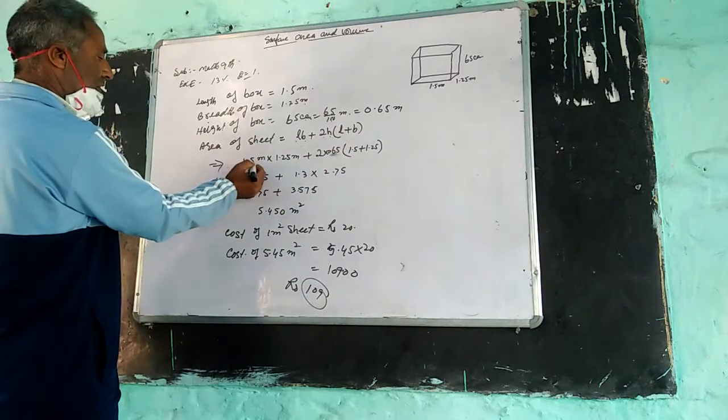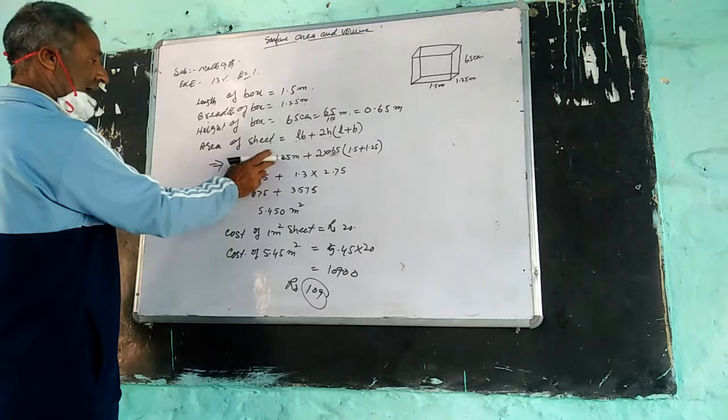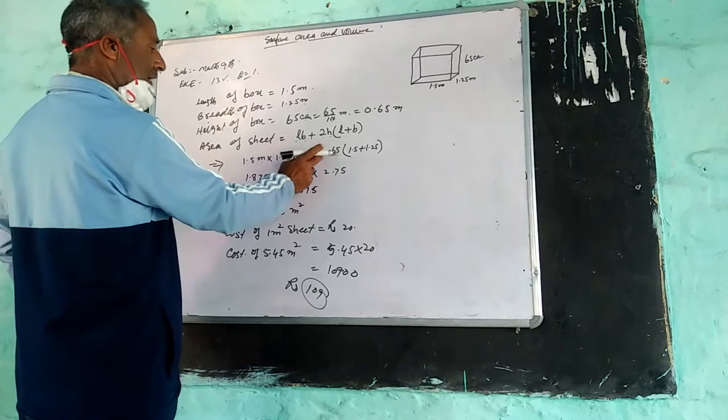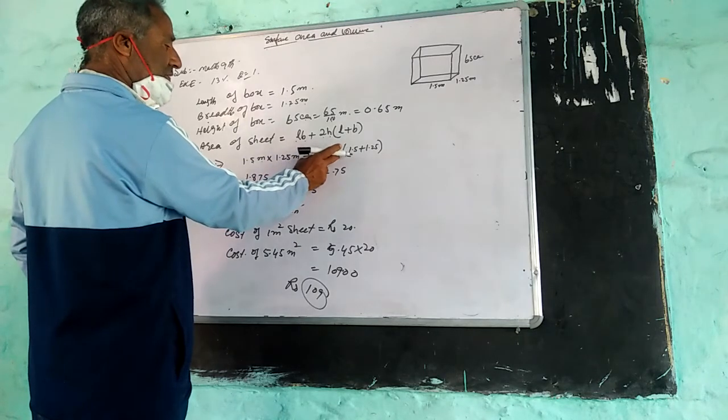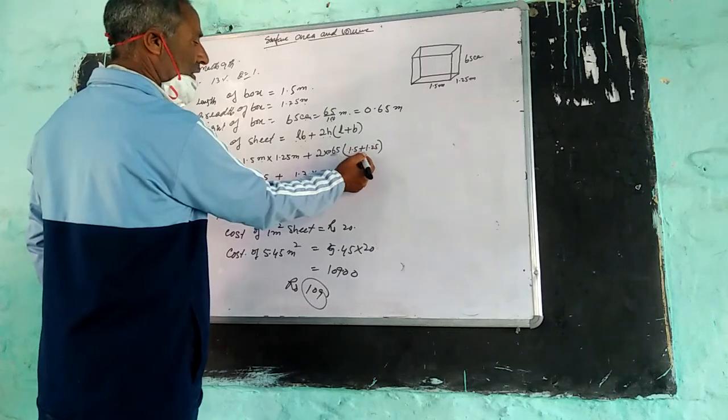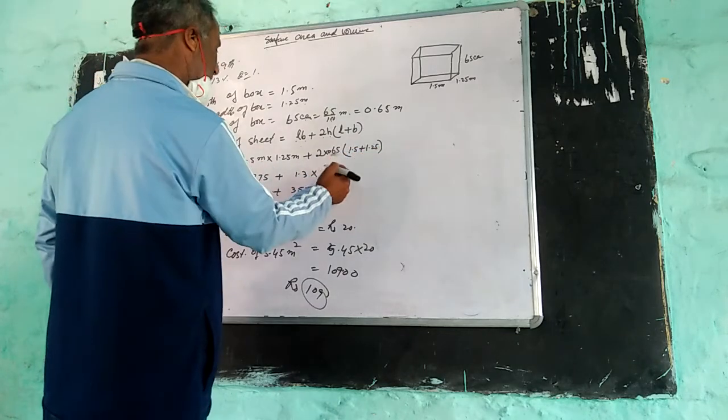So it is equal to 1.5 meters length times 1.25 meters breadth, plus twice height 0.65 meters, times L plus B, which is 1.5 plus 1.25 meters.